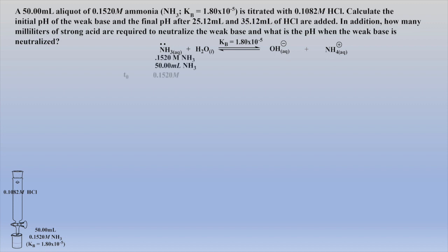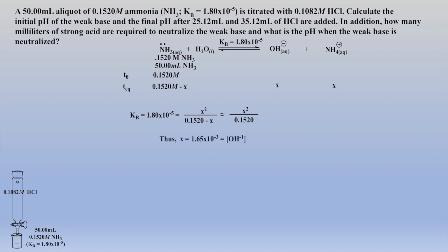Now let's also include the initial concentration of base and the change in concentrations when at equilibrium. We can substitute the equilibrium concentrations into the expression for Kb. The denominator can be simplified employing the 5% rule, which was discussed in detail in previous reviews, to afford a much easier calculation. X, the hydroxide concentration, is now easily calculated. Let's check the 5% rule assumption — was the amount of hydroxide formed less than 5% of the initial concentration of weak base? Yes, just a little more than 1%.